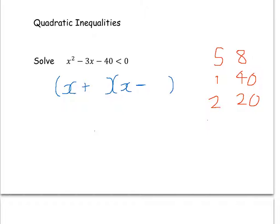is 5 take away 8, which is minus 3. So (x + 5)(x - 8) is less than 0. This means that our two solutions are going to be x equals minus 5 and x equals 8.